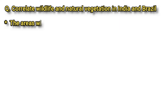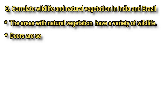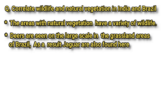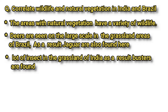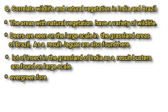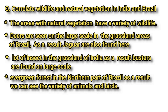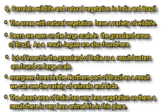Let's correlate natural vegetation and wildlife in India and Brazil. Plants are the food of herbivores, while herbivores are the food of carnivores. Therefore, areas with rich natural vegetation have a variety of wildlife. Deer are found on a large scale in the grasslands of Brazil, and as a result jaguars are also found there. There are many insects in the grasslands of India, and as a result bustards are found in large numbers. The evergreen forest of northern Brazil supports a variety of animals and birds, while the desert areas of India have very little vegetation and therefore very little animal life.